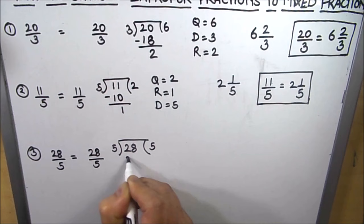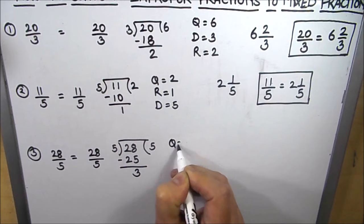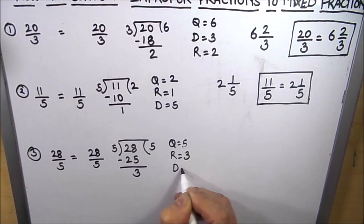So 5 times 5 is 25 and our remainder is 3. So here quotient is 5, remainder is 3, and divisor is 5.